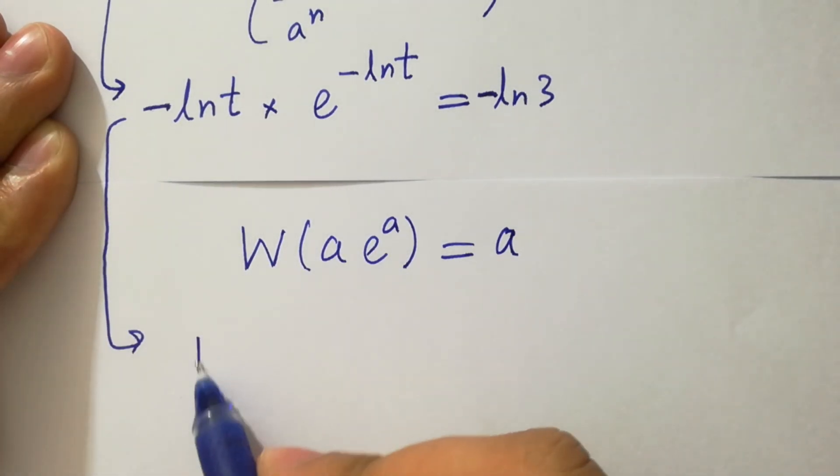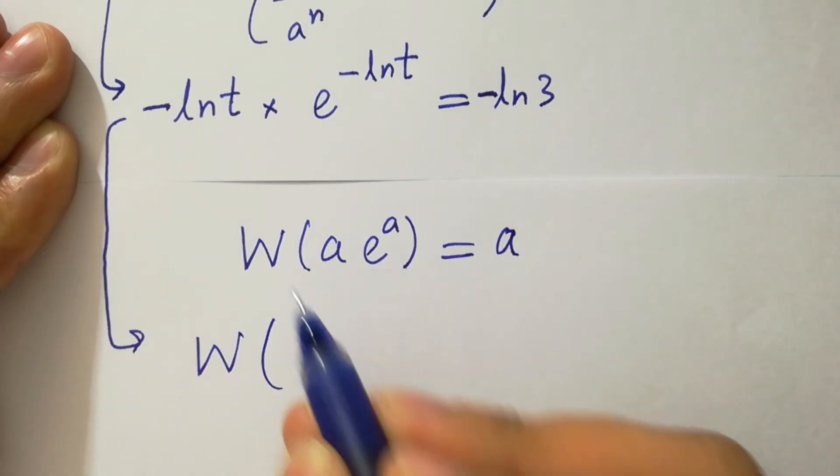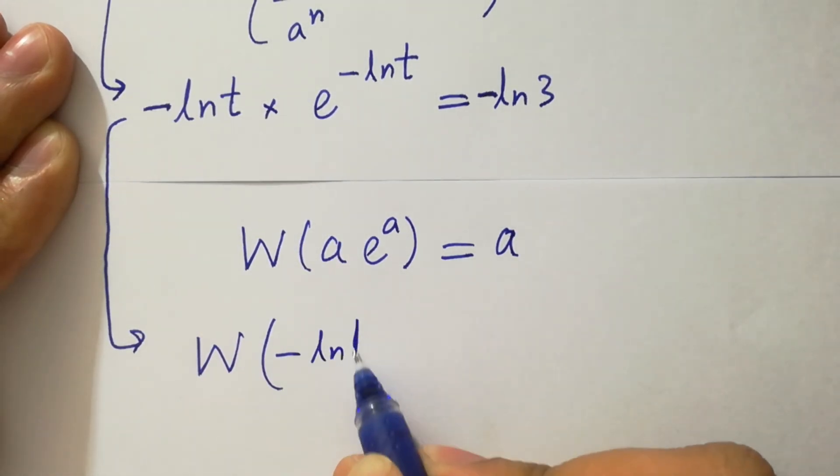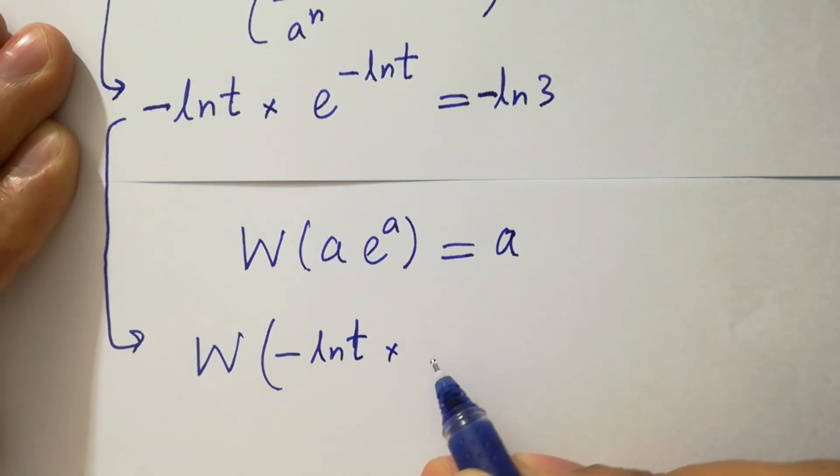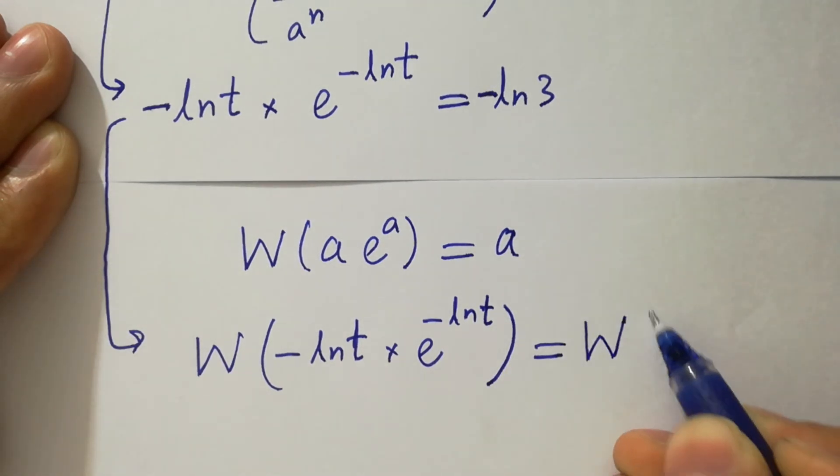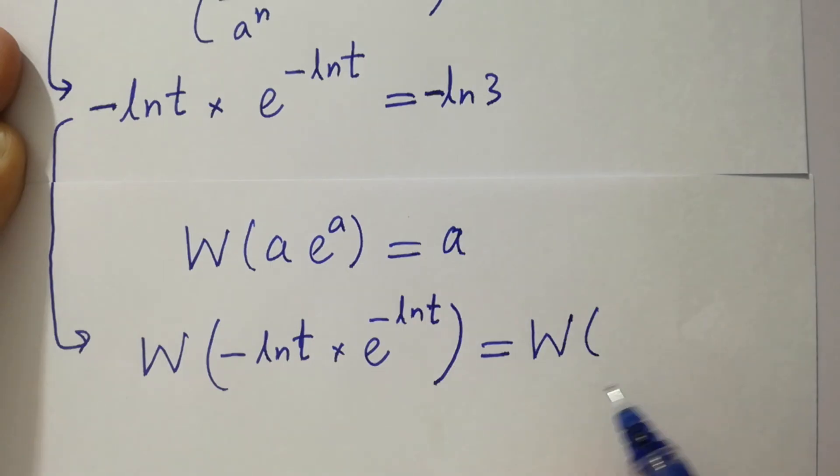Take w on both sides. Here we have ln t times e to the power minus ln t equal to w minus ln 3.